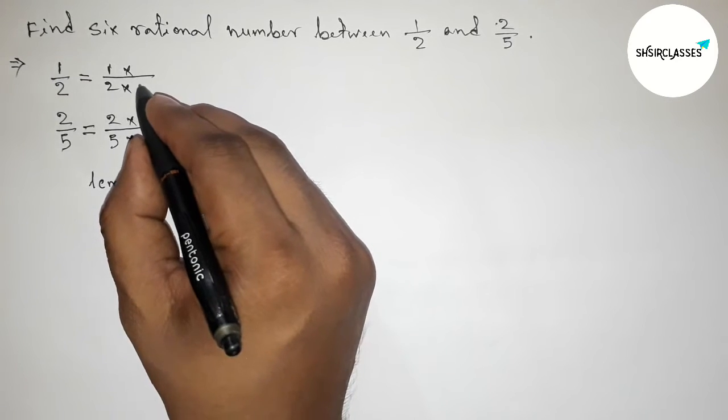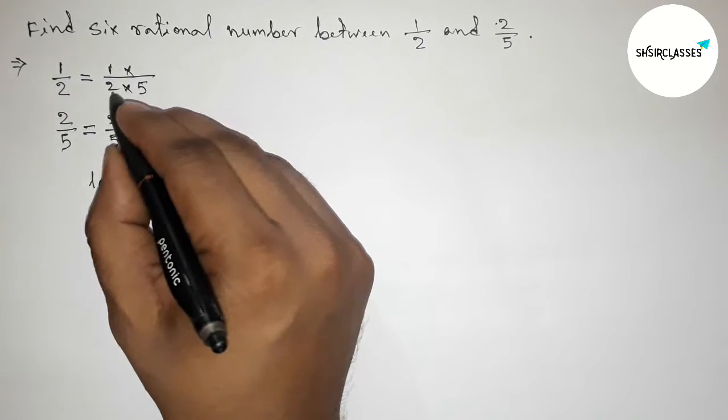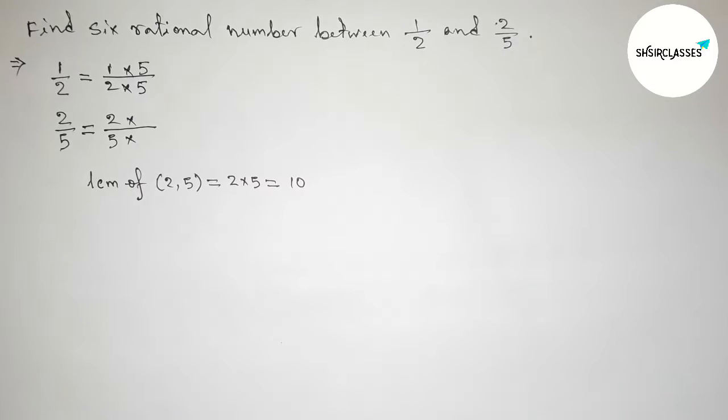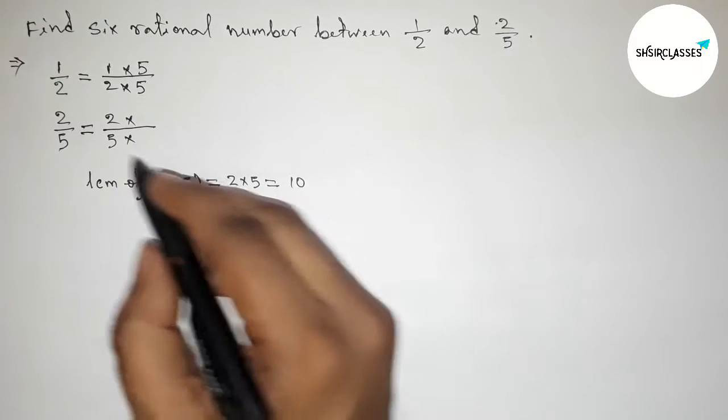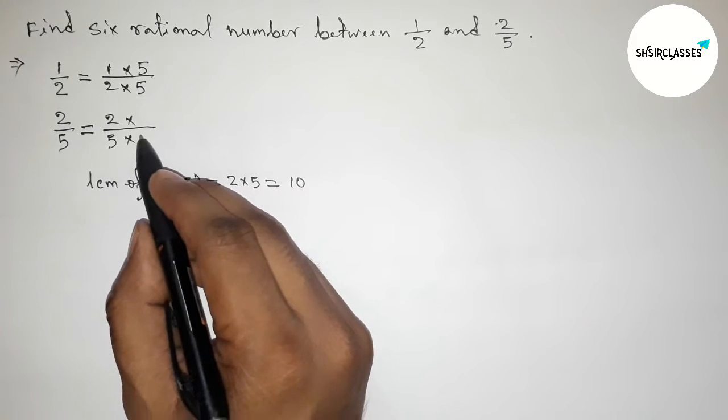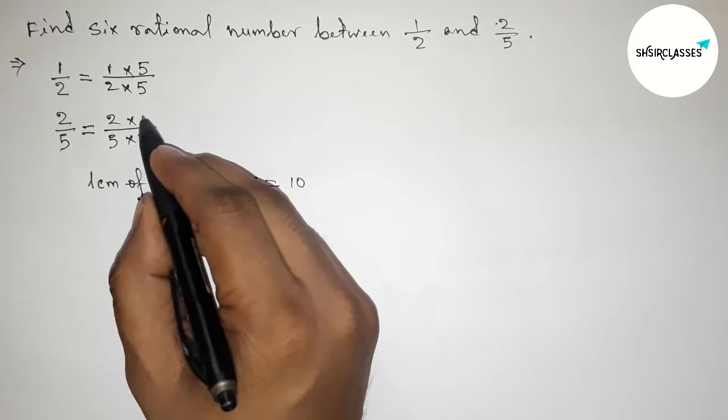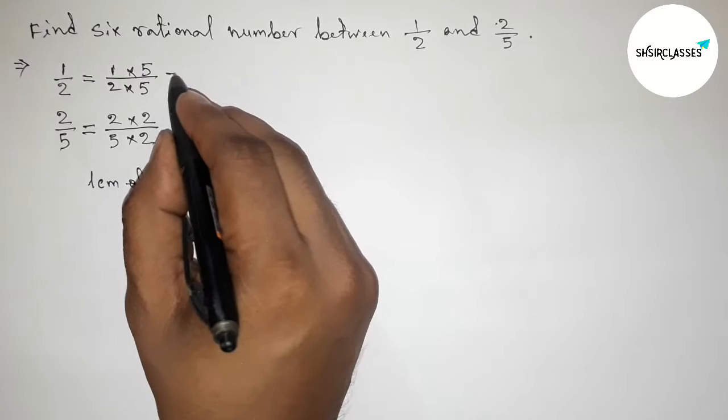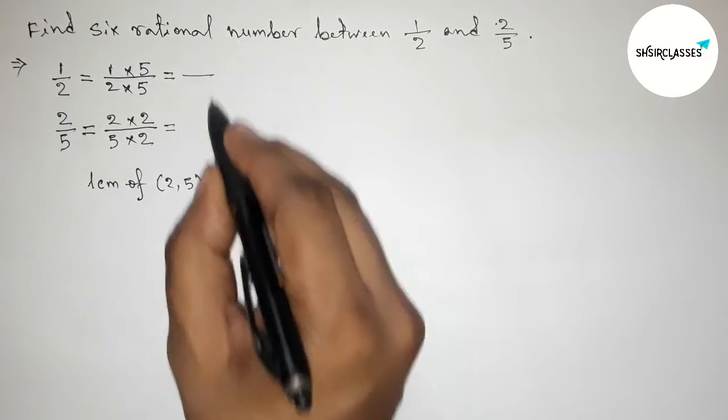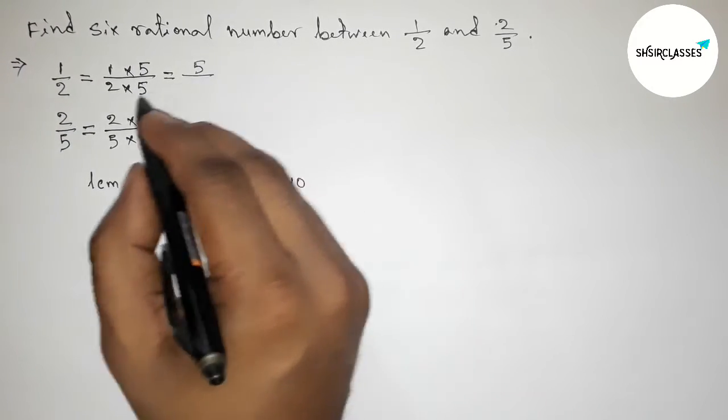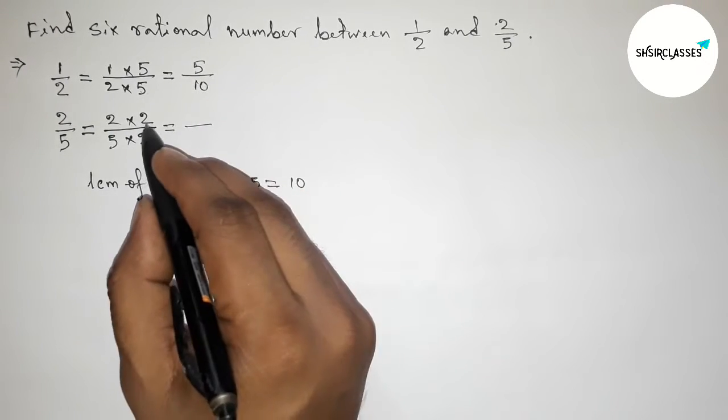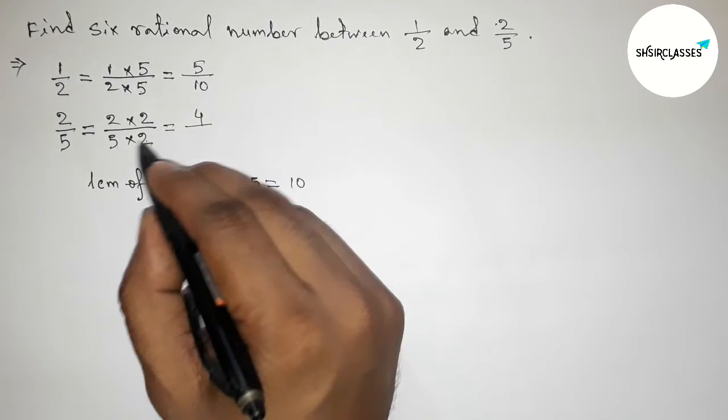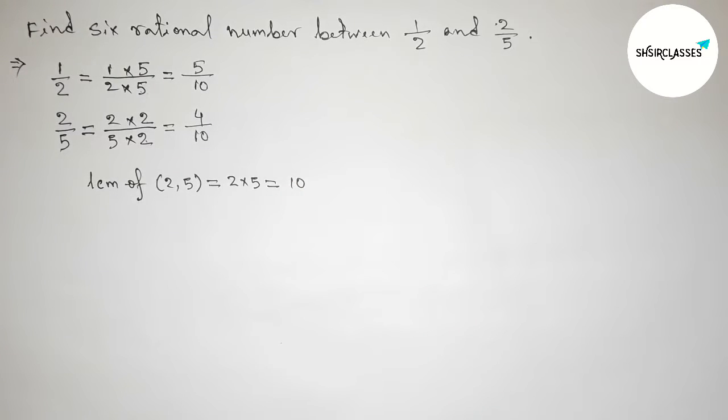This equals to 5 times 1 is 5, and 5 times 2 is 10. Here 2 times 2 is 4, 5 times 2 is 10. So we have 5/10 and 4/10.